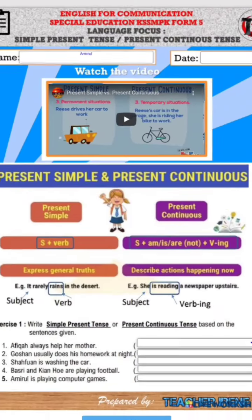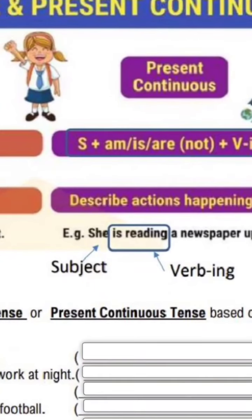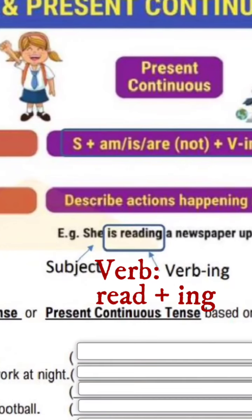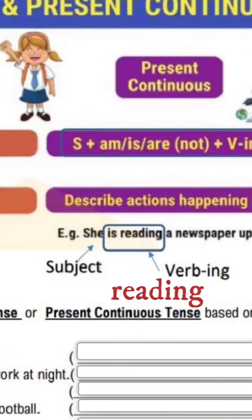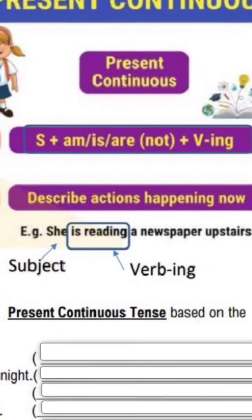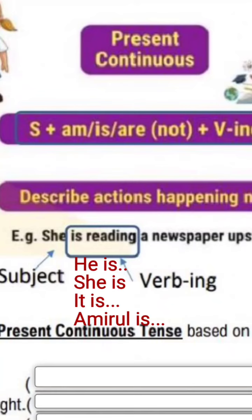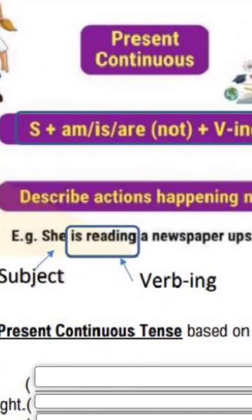Subject di sini ialah 'she', ditambah dengan verb-ing. Verb tadi ialah 'read' sebenarnya. Bila ditambah dengan -ing di sini akan jadi 'reading'. So 'she is' — 'is' ialah dia punya subject-verb agreement. Sebenarnya kamu semua tahu kan: bila 'she is', 'he is', 'Amiral is', 'my son is' — itu menggunakan 'is' sebab orang seorang.